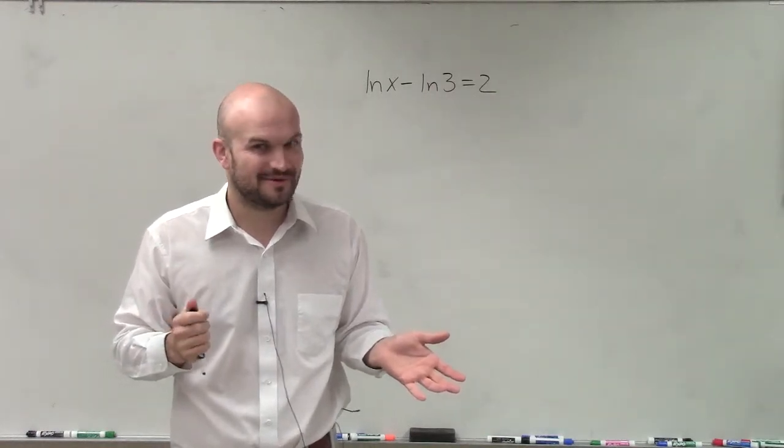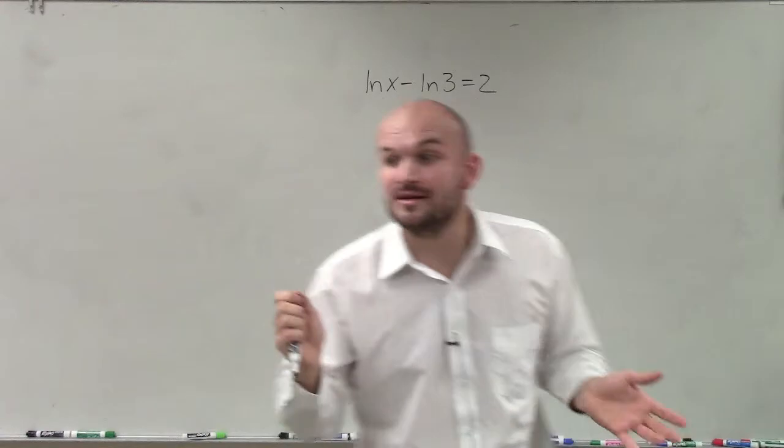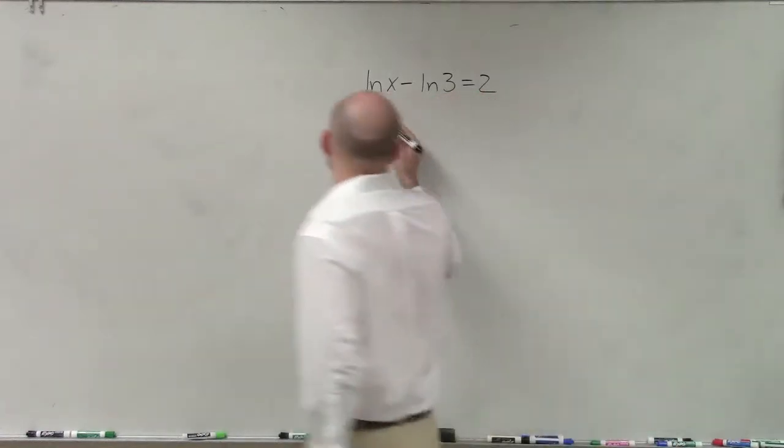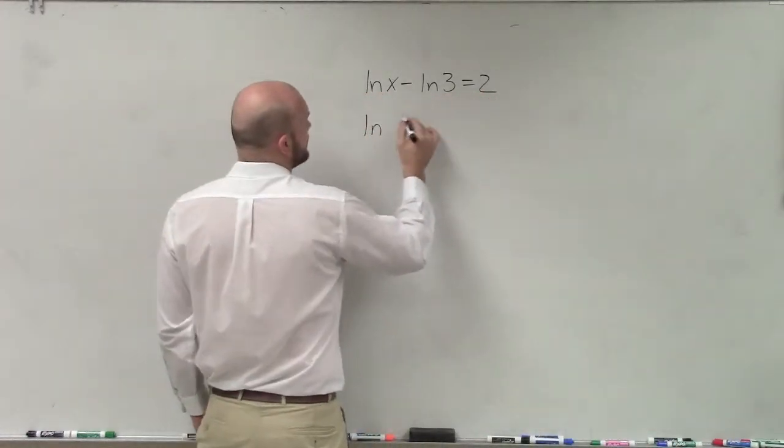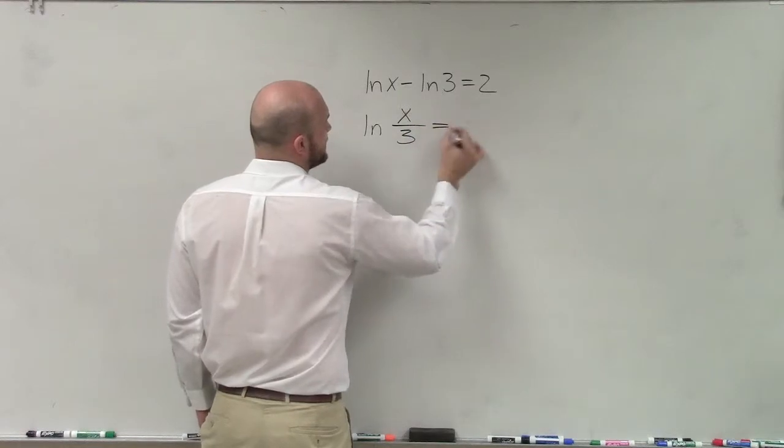We can write it in a logarithm form. Yeah, we can write it as the quotient, right? So I can rewrite this as ln of x over 3 equals 2, right?